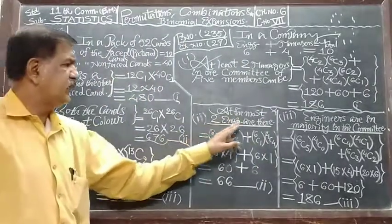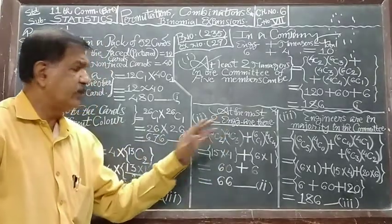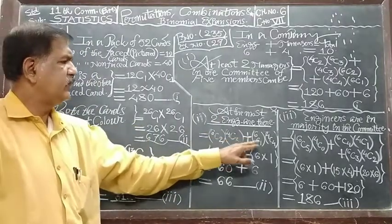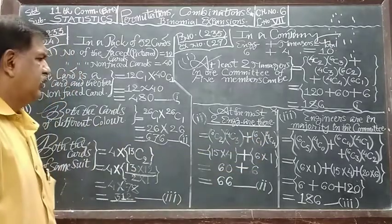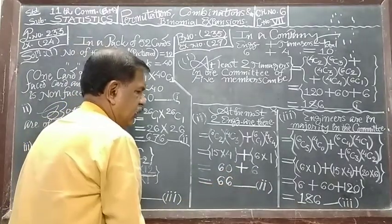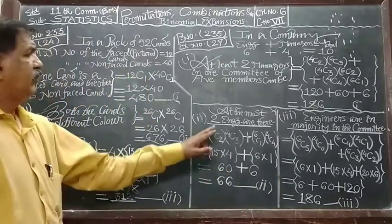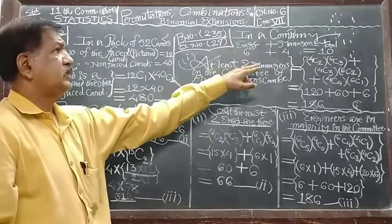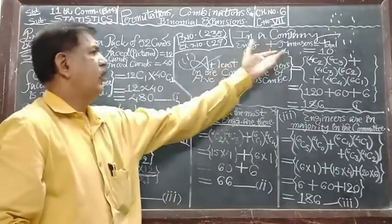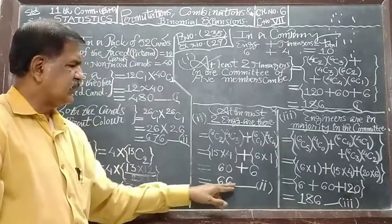At the most, 2 engineers are there in a committee. At the most 2 means 2 or less. Means 2 engineers and 3 managers, or 1 engineer and 4 managers. Answer will be 60 plus 6 equal to 66. Call this as result number 2 or answer number 2. At the most 2 engineers means 2 or less. 2, then remaining 3 managers, or 1 and all the 4 managers. Then there is no possibility that no engineer. This was 66, result number 2.